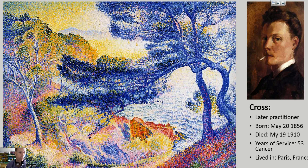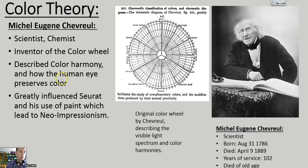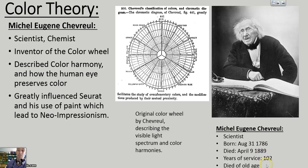The color theory behind neo-impressionism was all from Michel Chevreul — the scientist and chemist who developed the color wheel. He did lots of other scientific work as well, and he wrote a treatise describing color harmony. This is his original color wheel, designed based on visible light waves but then applied to painting. He was born in 1786 and died in 1889 at age 102, and he was the greatest influence on Seurat that led to the idea of neo-impressionism.